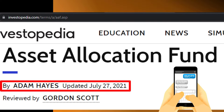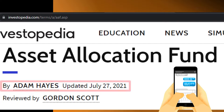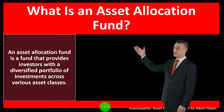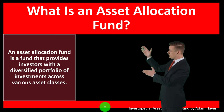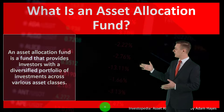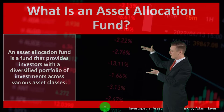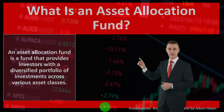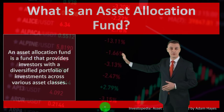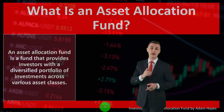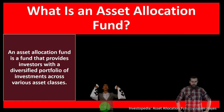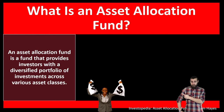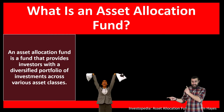This is by Adam Hayes, updated July 27, 2021. In prior presentations we've been looking at investment goals, strategies, and tools — keeping in mind the two major categories of investments: fixed income, typically bonds, and equities, typically common stock. We also considered tools like mutual funds and ETFs, which allow us to diversify with less of an initial investment than buying individual stocks or bonds.